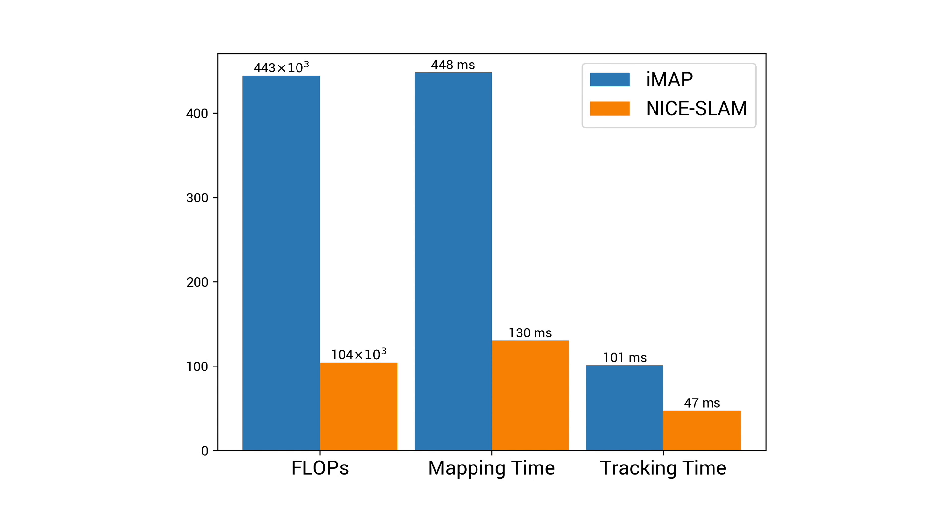Our novel scene representation not only improves the mapping and the tracking quality compared to IMAP, but also requires much less computations and is a few times faster in both mapping and tracking.